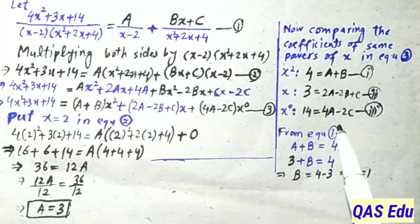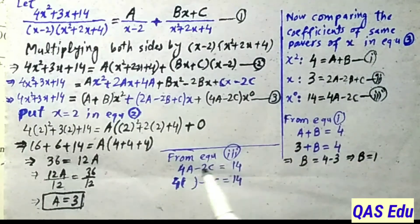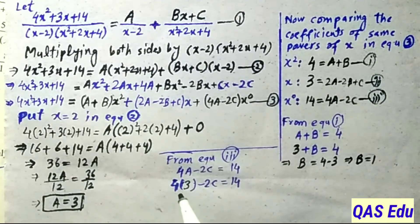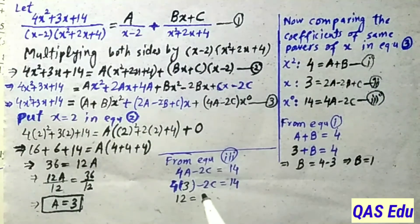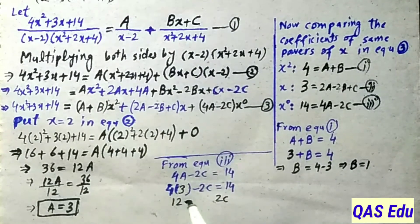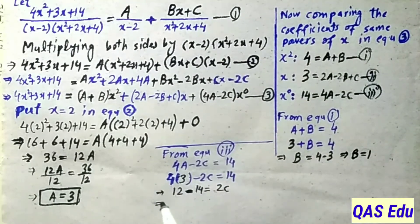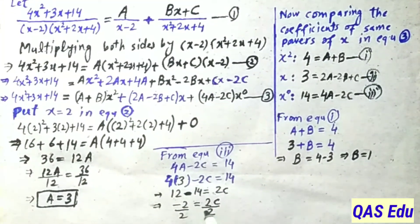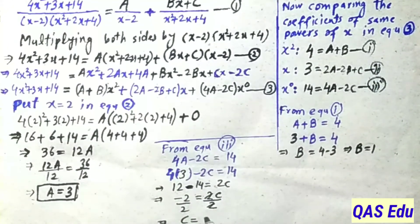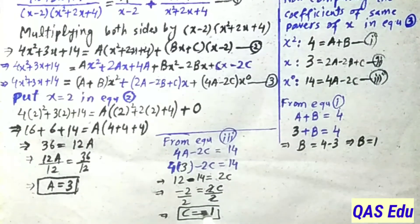Using A = 3 in equation number 3: 4A - 2C = 14. Substituting gives 4(3) - 2C = 14, so 12 - 2C = 14. Moving -2C to the right gives 2C = 12 - 14 = -2. Dividing by 2: C = -1. So C = -1.